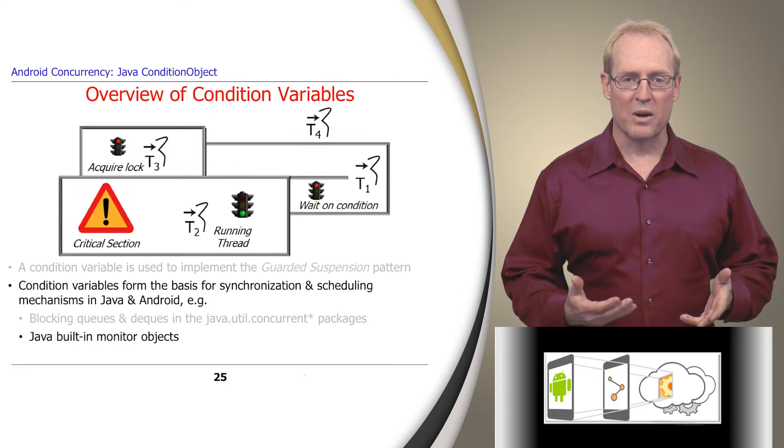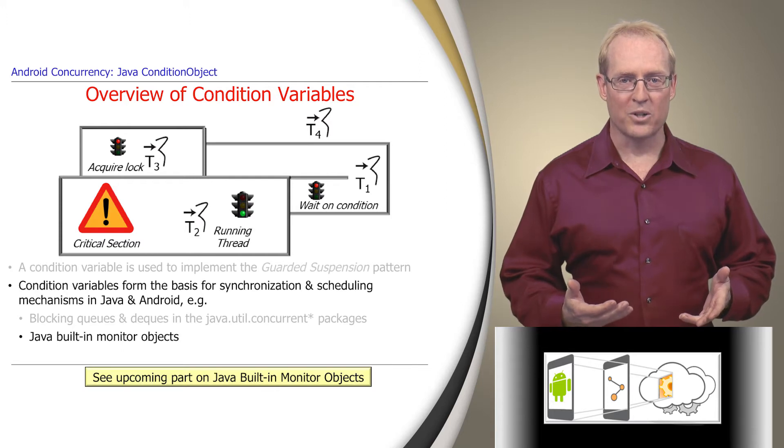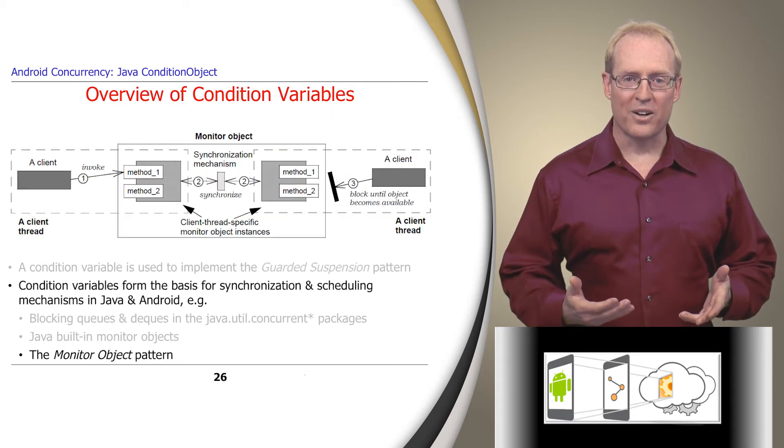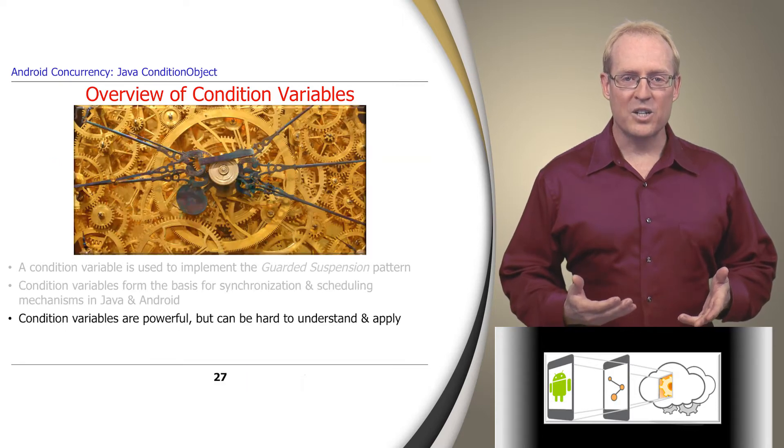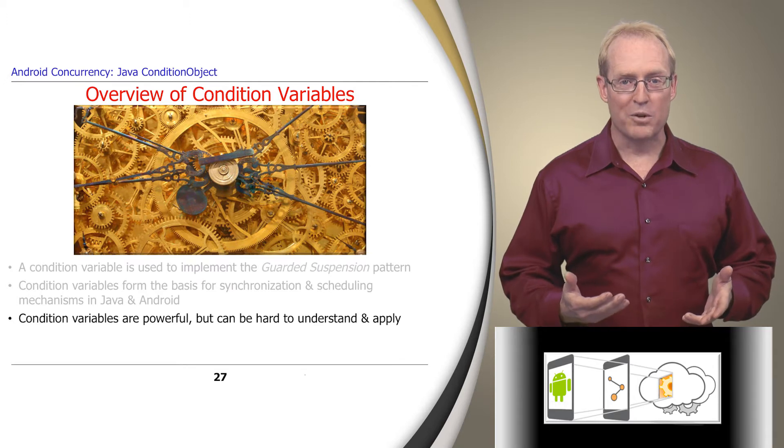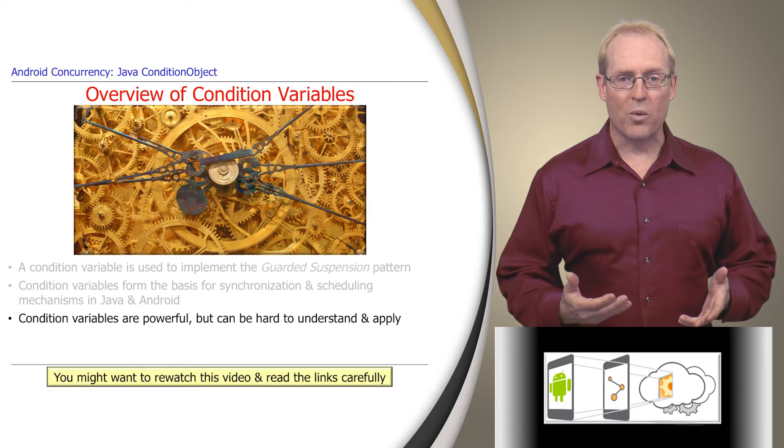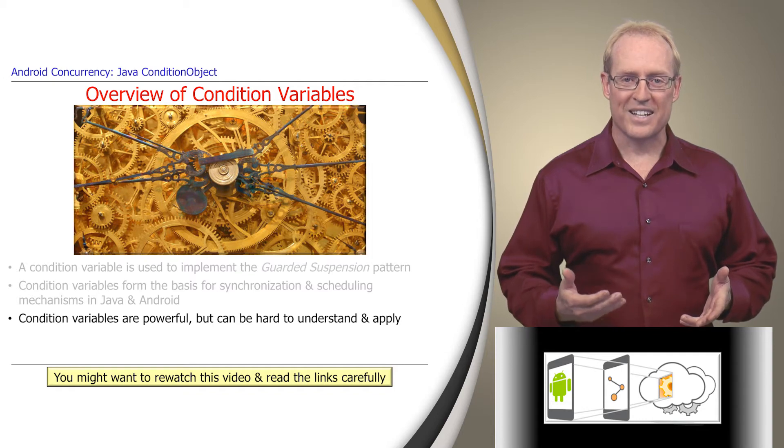Condition variables are also instrumental in Java built-in monitor objects, described in an upcoming video in this module, and the monitor object pattern. Condition variables are a powerful synchronization and scheduling mechanism, but they have a lot of moving parts, which can make them hard to understand and apply properly. So you may want to watch this video multiple times and read the links shown at the bottom of the slides carefully.